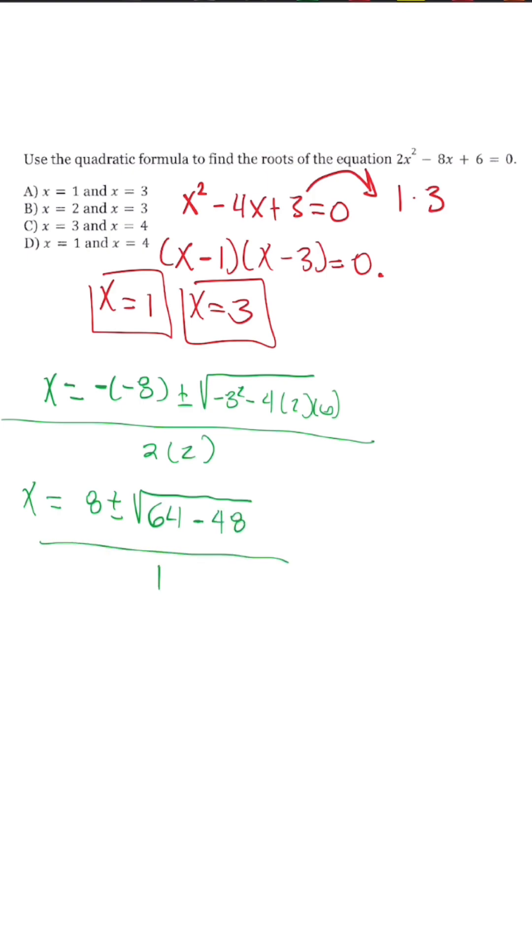x is equal to 8 plus or minus radical 16 over 4. When we simplify again, x is equal to 8 plus or minus 4 all over 4.